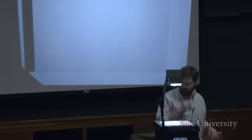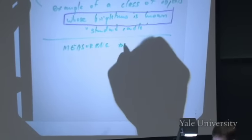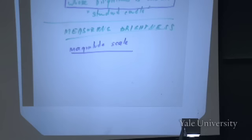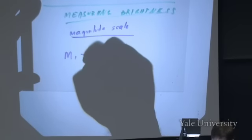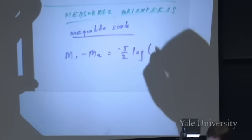This brings us to the awkward question of how do you measure brightness. We have to talk about one of the great impediments to learning astronomy: the magnitude scale. Astronomers count brightness upside down and logarithmically. The key numerical relationship looks like this: if you subtract the magnitude of one object from another, that equals minus five-halves times the log of the ratio of the brightnesses.